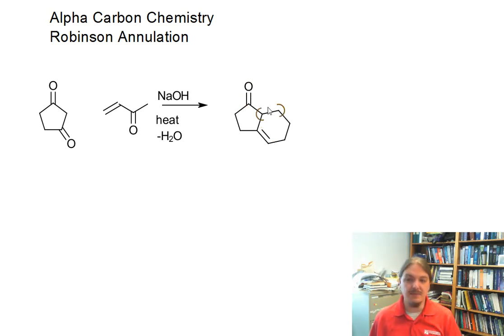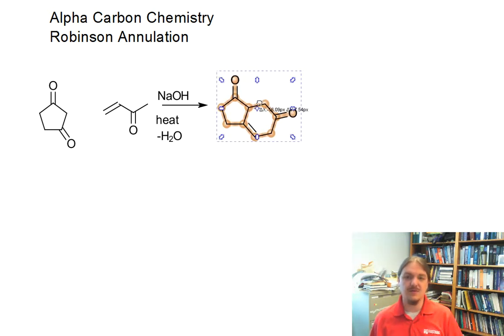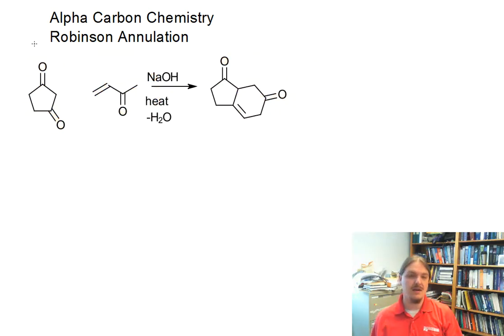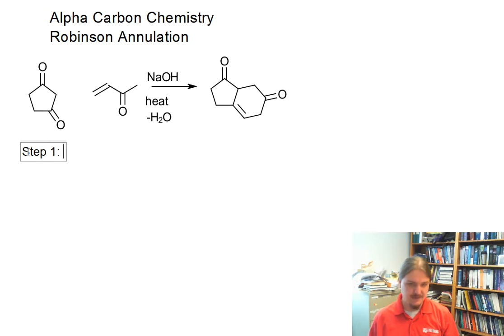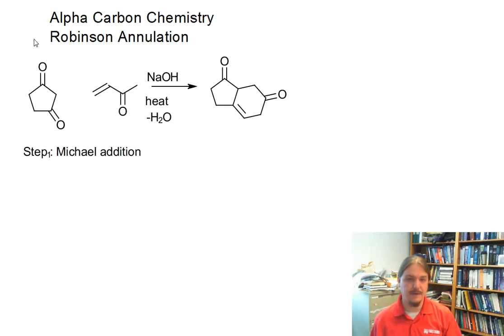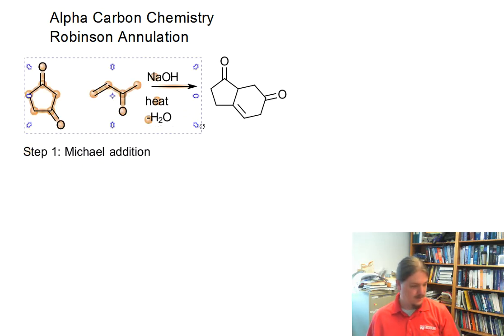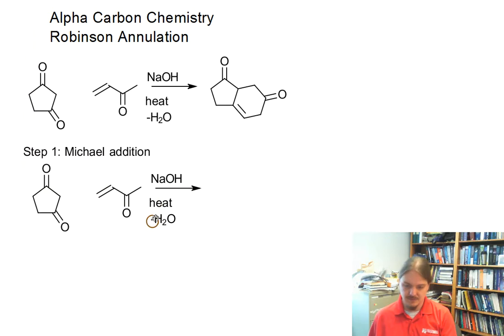So the product ends up looking like this. One of the cool things about the Robinson annulation is it takes a couple of simple-looking molecules and combines them together. It turns out that this is a two-step process. The first step is a Michael addition, and I'm going to draw out these things and some mechanisms as well.